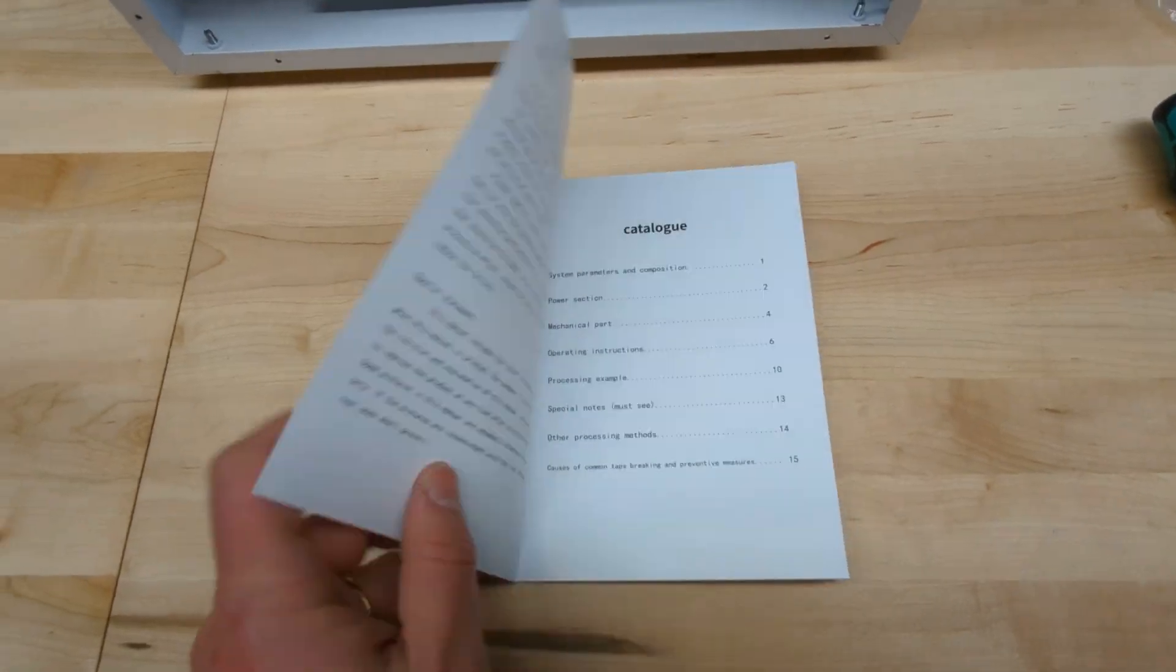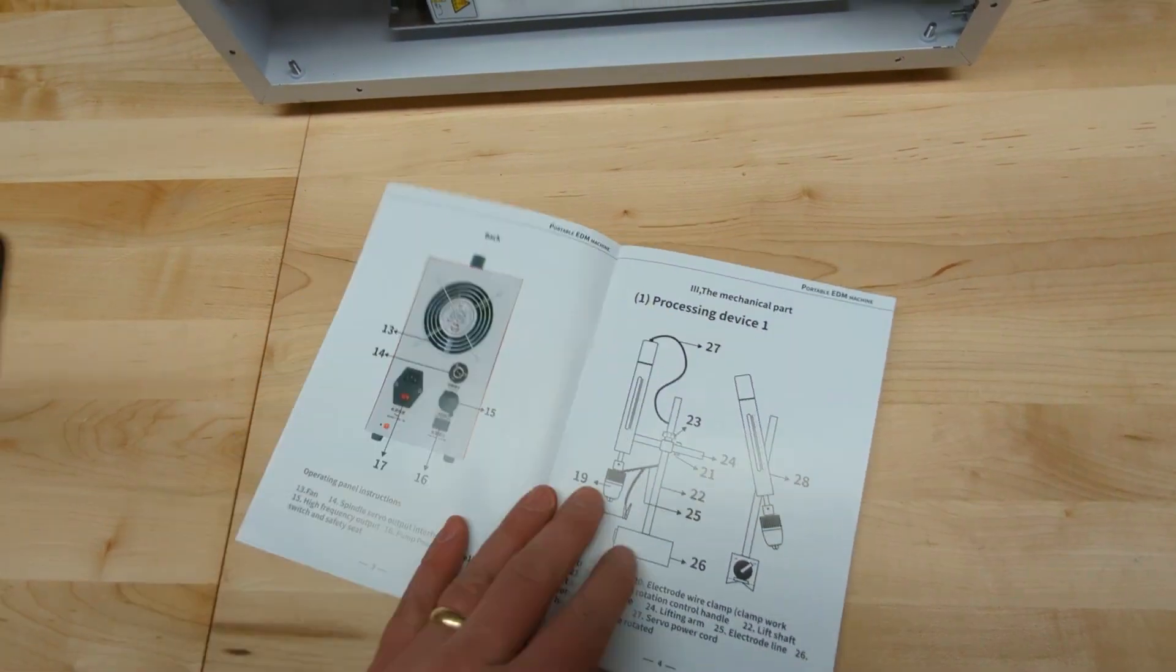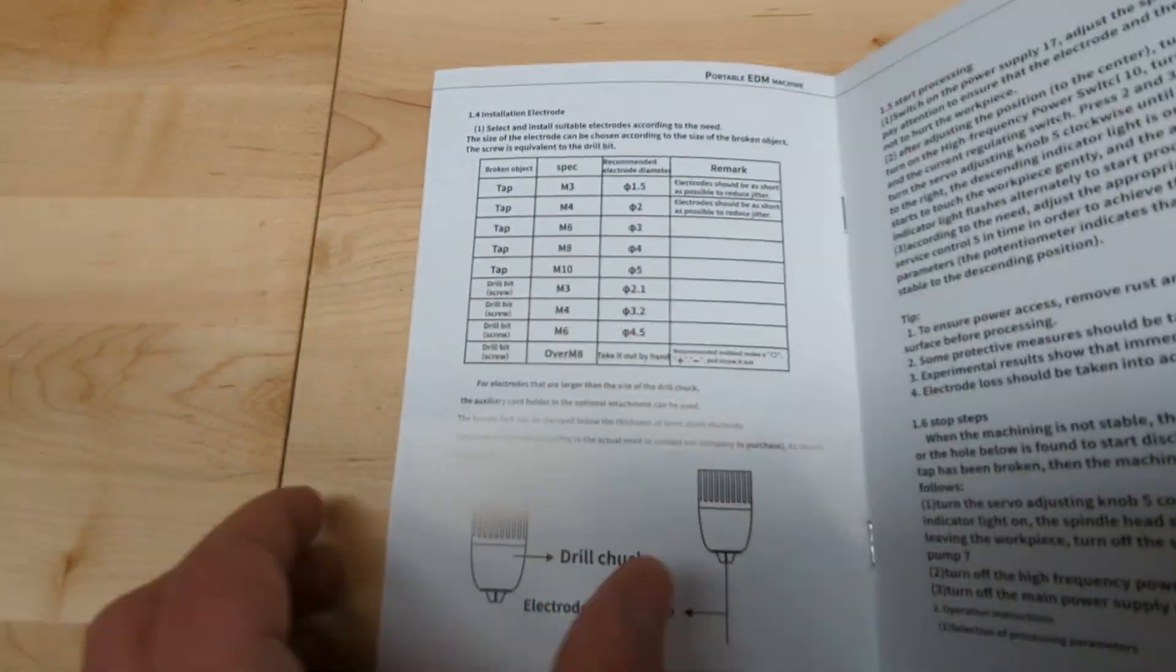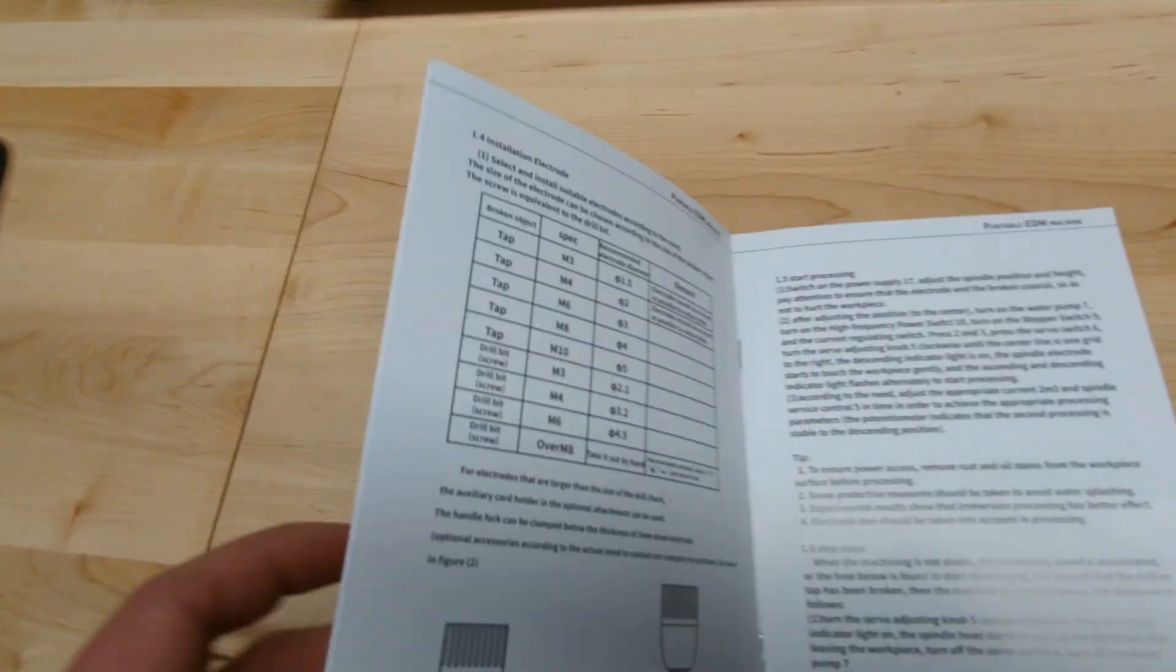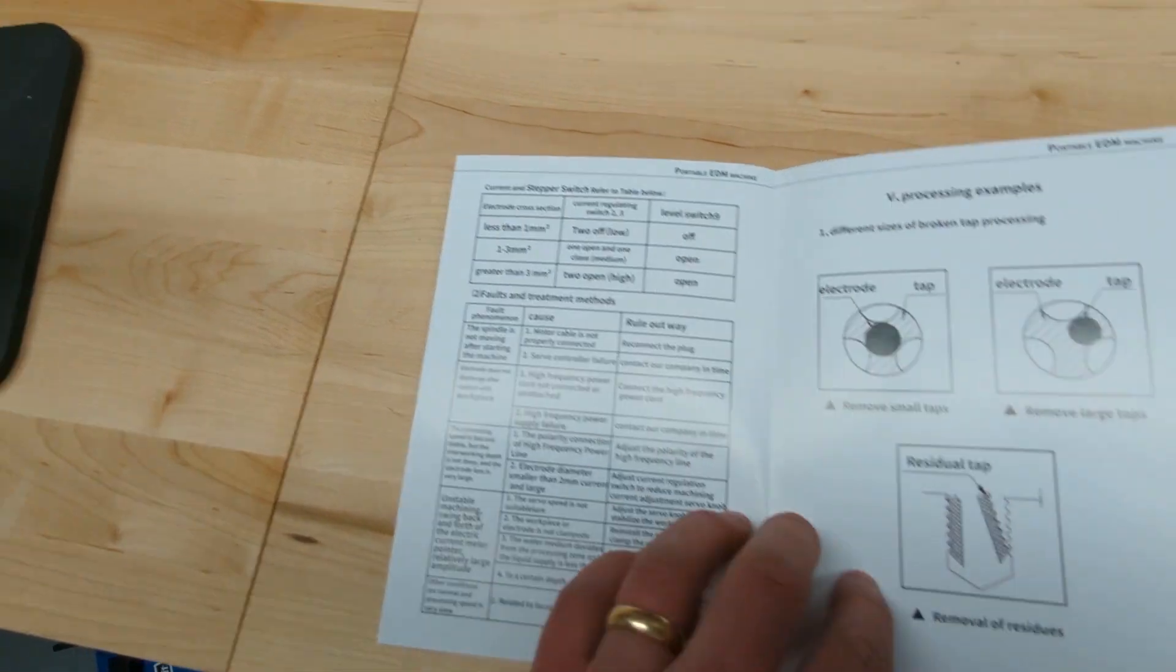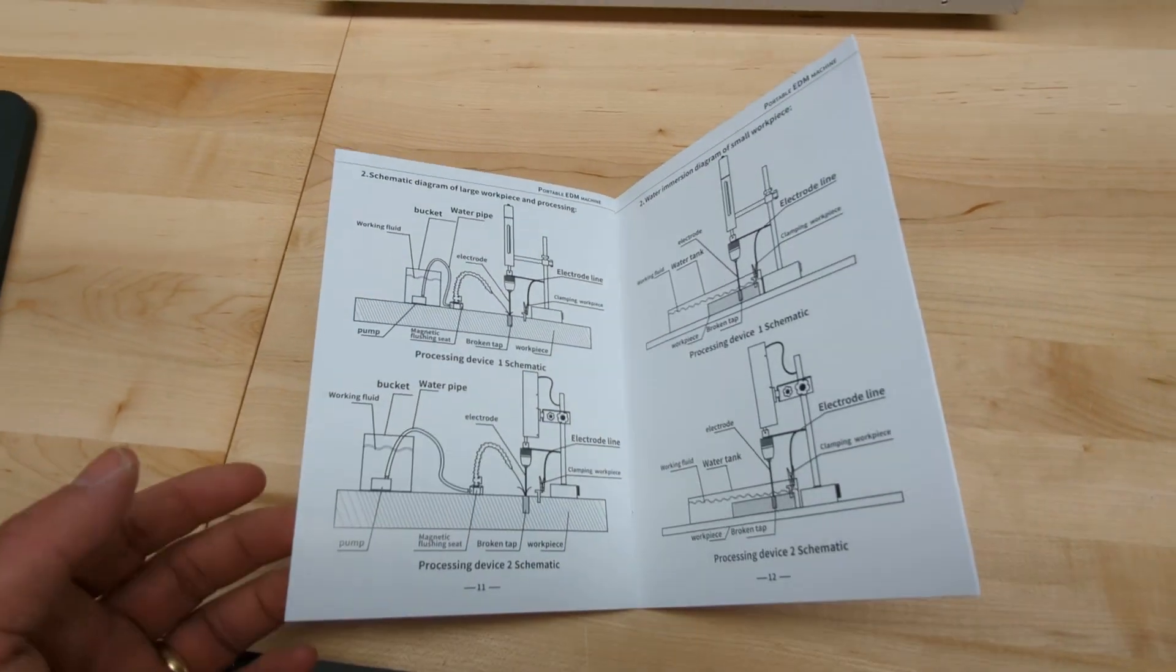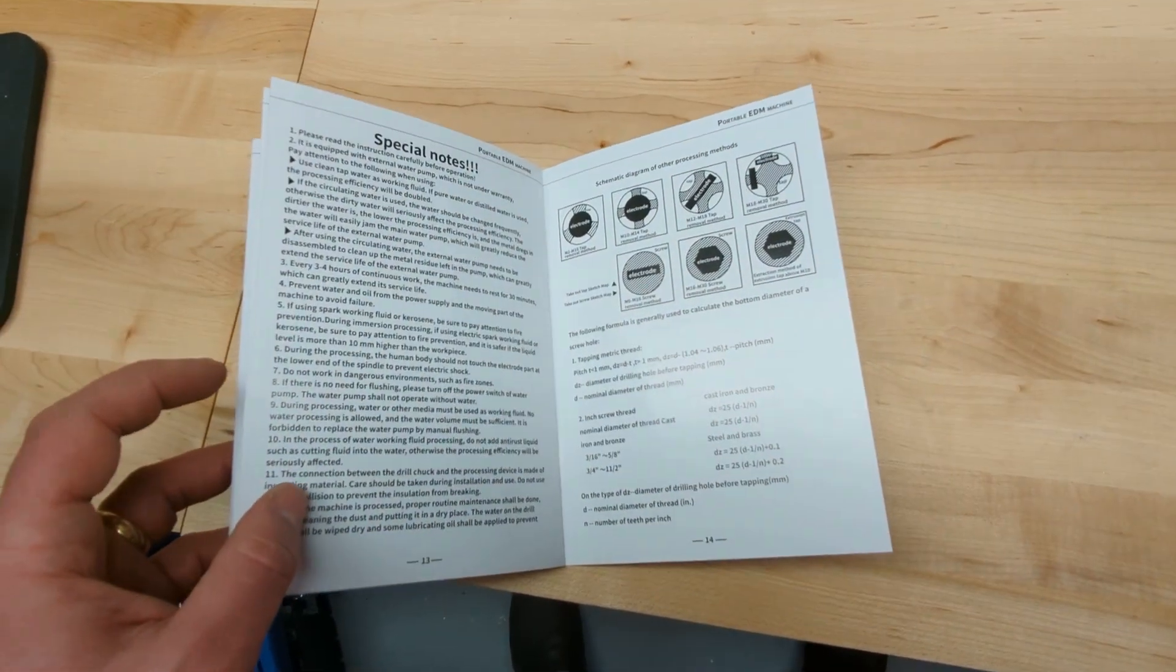The manual was a bit of a pleasant surprise. It's actually quite good. Goes through what size electrodes to use for various taps and drills you might be going through and the current settings for it. Watch out, you will need some safety considerations because you are at 70 volts and you're generating a bunch of UV with the sparks potentially. Make sure you have the right protection.